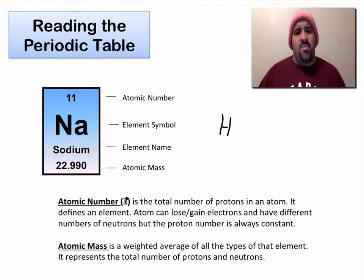So the atomic number, sometimes called Z, is the total number of protons in an atom. So this number right here on the periodic table always represents the proton number. Atoms can lose or gain electrons and they can even have different numbers of neutrons, but the proton number must always be the same. Sodium will always have 11 protons. It cannot have 10, it cannot have 12, it cannot have any different number of protons.